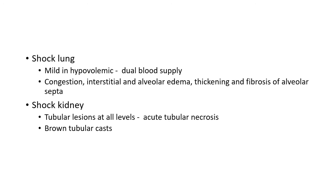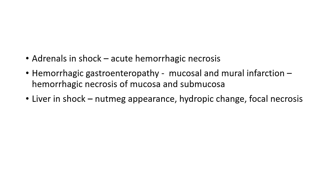Lungs are usually not much affected in hypovolemic shock due to their dual blood supply, but this does not apply to septic shock. In lungs we see congestion, interstitial and alveolar edema, and thickening and fibrosis of alveolar septa. In kidneys, tubular lesions at all levels are seen — referred to as acute tubular necrosis. If extensive muscle injury or intravascular hemolysis is associated, brown tubular casts may also be seen.